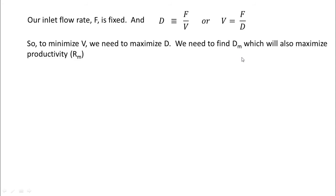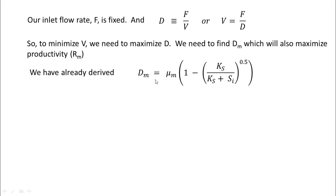We need to find Dm, which will also maximize productivity because Dm × μm × X gives productivity. We have already derived Dm as: Dm = μm × (1 − √(Ks / (Ks + Si))), which we derived in our previous lecture.